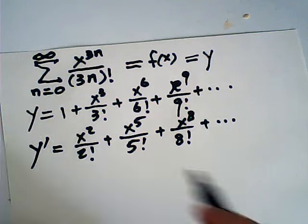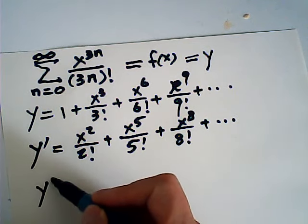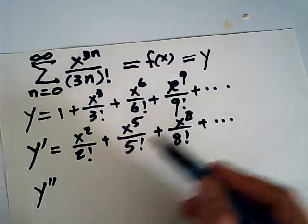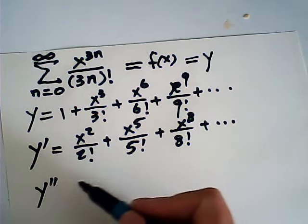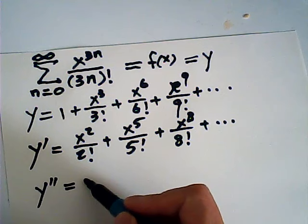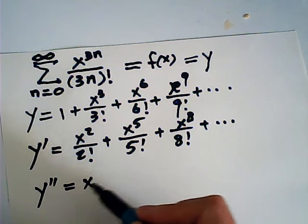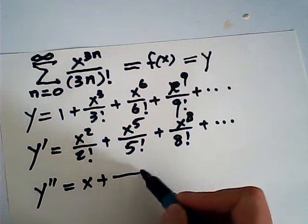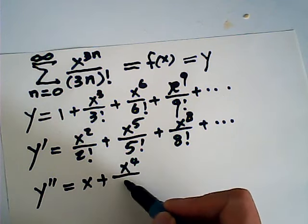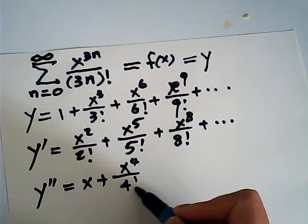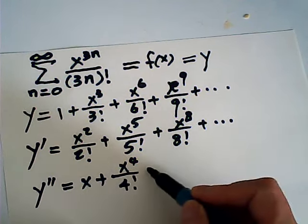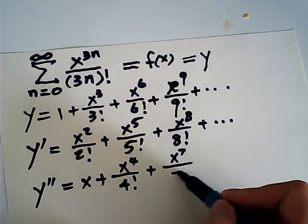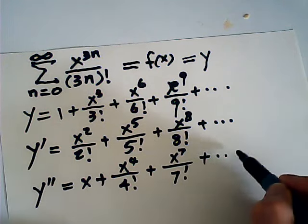Now if we take the second derivative of y with respect to x, that will be equal to x over 1 factorial, plus x to the fourth over 4 factorial, plus x to the seventh over 7 factorial, and so on.